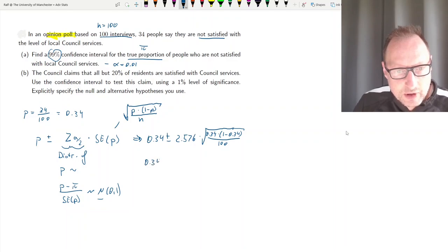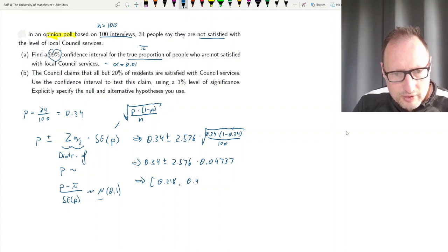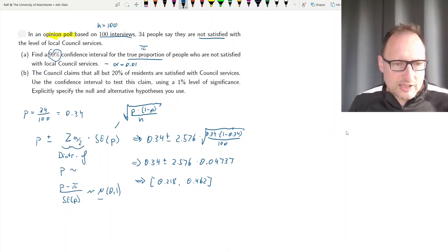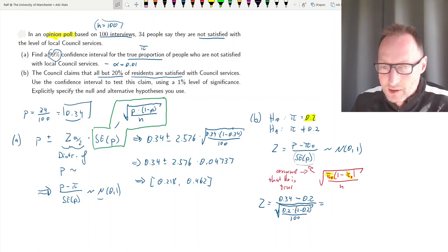That leads to 0.34 plus minus 2.576 times 0.04737. That leads to a confidence interval of 0.218 as the lower bound and 0.462 at the upper bound. So you can see that's actually a quite wide confidence interval.